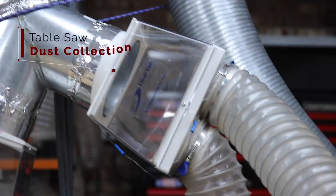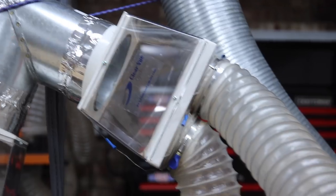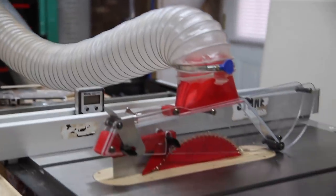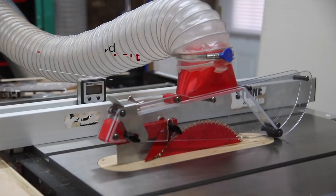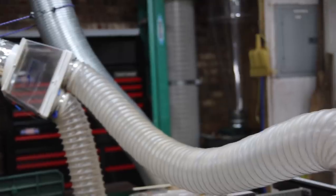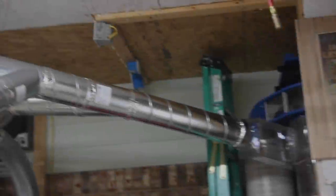Now looking at the table saw, this is the dust collection for the table saw and I've got both four inch ports going to the table saw, one coming over to the over the blade, which is a shark guard overhead port. This is the four inch version. And the other one is going down to the bottom of the table saw. And that goes all the way back to the cyclone.